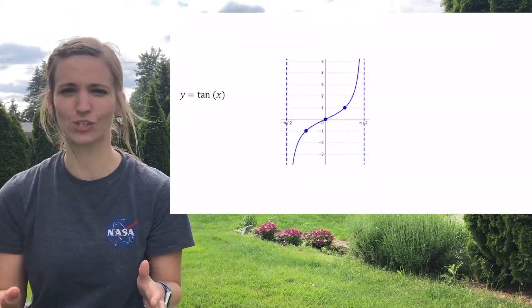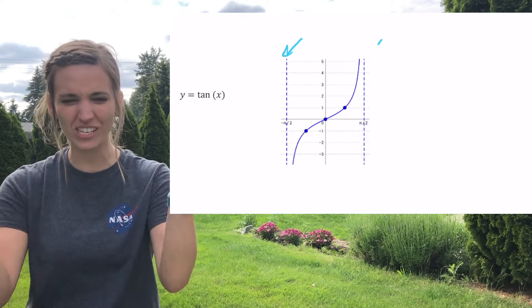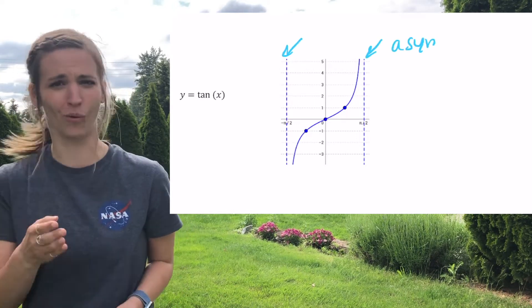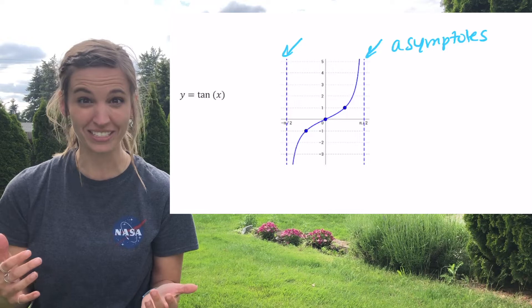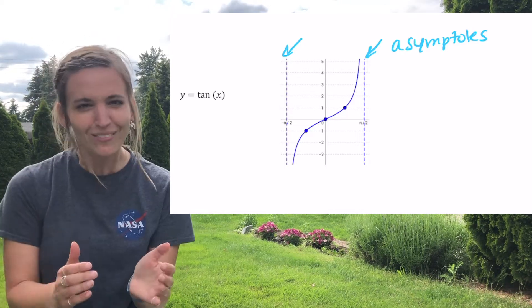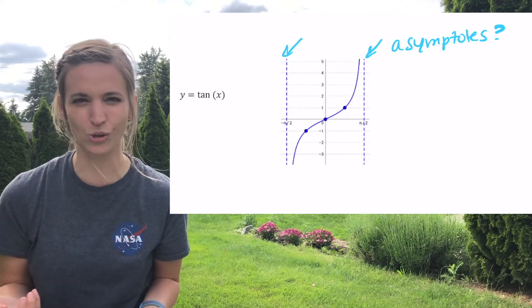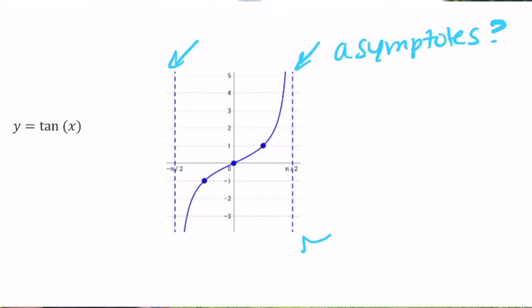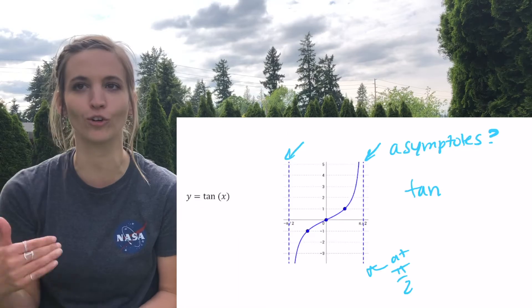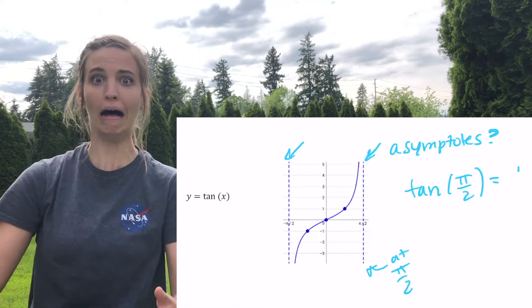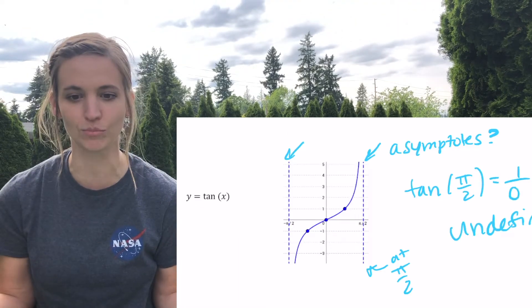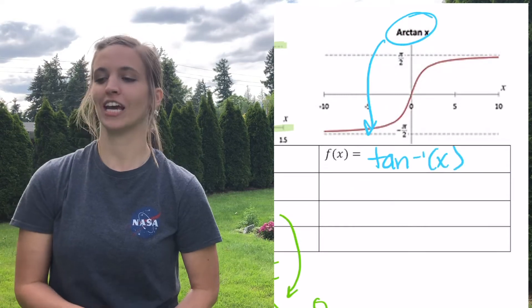Inverse tangent — well, what does tangent's graph look like? So tangent ends up looking totally different from sine and cosine. There are two asymptotes with a weird wiggle in between — that's really what tangent looks like repeatedly. It's a periodic function so it keeps repeating. Why are these asymptotes there? They're at pi over 2. Tangent of pi over 2: sine over cosine would be 1 over 0 — that's undefined, so that's why we have asymptotes there.